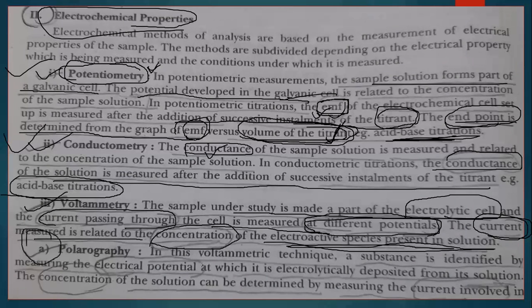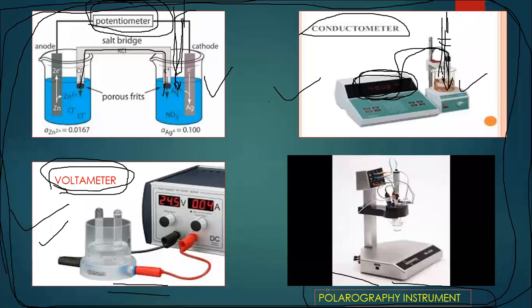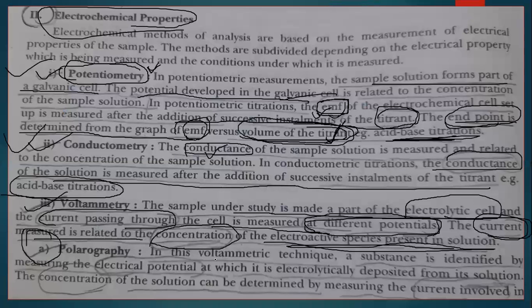Polarography, as mentioned, is also a voltammetric technique, in which a dropping mercury electrode is used. This technique will be studied in detail in the last semester — in TYBSc. The substance is identified by measuring the electrical potential at which it is electrolytically deposited from its solution.